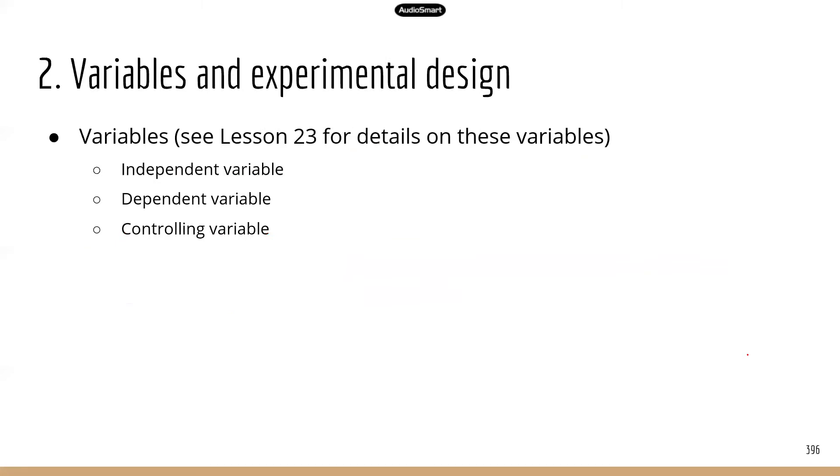The second topic in this chapter, based on the study manual, is variables and experimental design. So we have covered this previously in lesson 23. We talk about what these variables are and how to design a good experiment. So you can go back to lesson 23 and review these if needed.